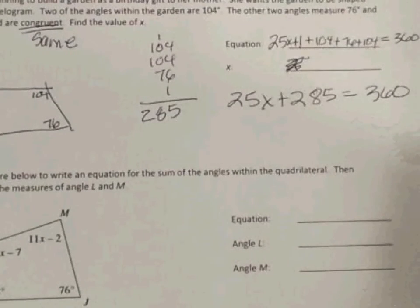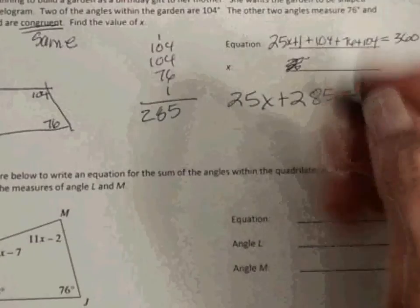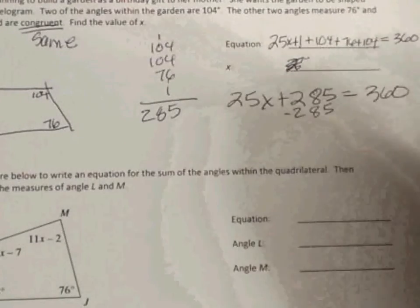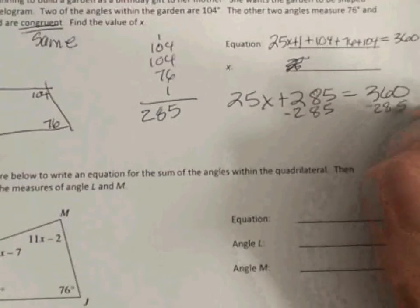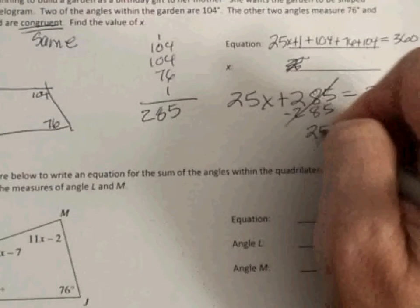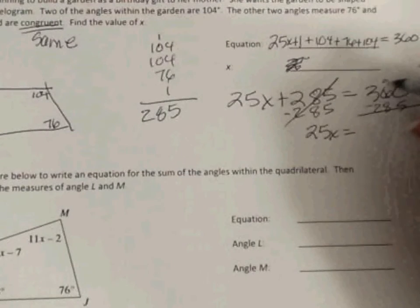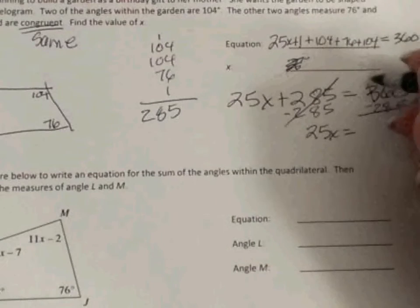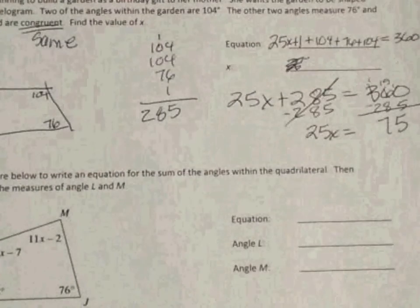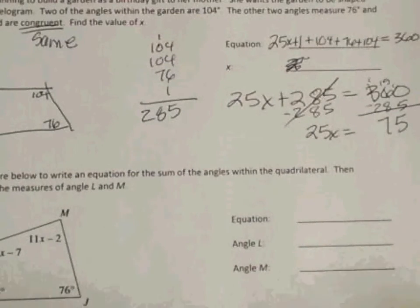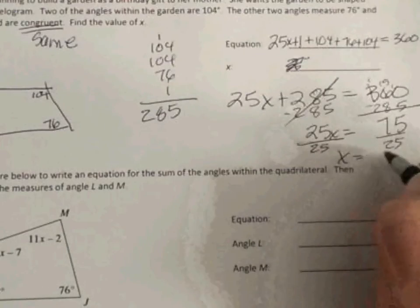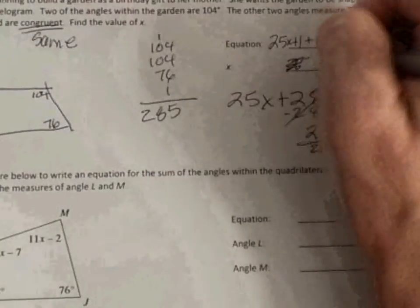So now think about solving our equations. I'm going to subtract. I want to get this 25x by itself. So I'm going to subtract 285 from both sides. That cancels each other out because there's zero pairs. I'm going to borrow. So now I have 25x equals 75. I'm going to divide both sides by 25. So x equals 3.